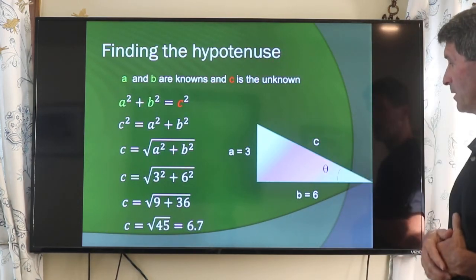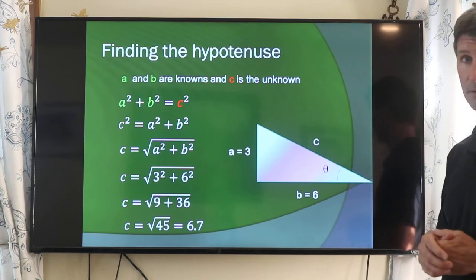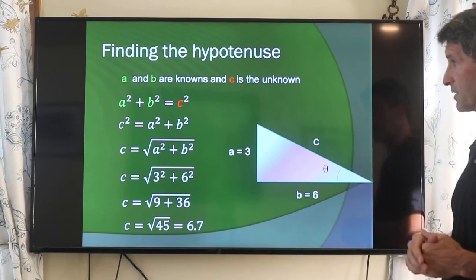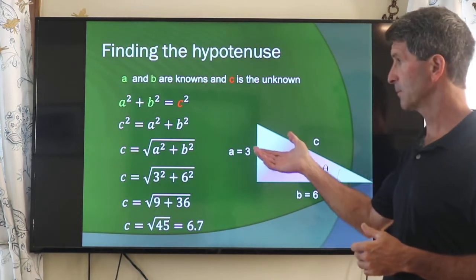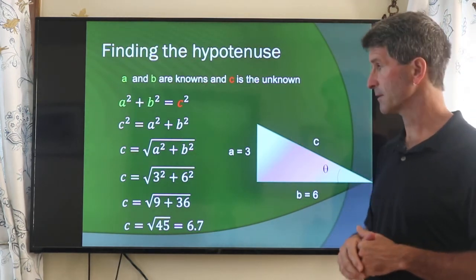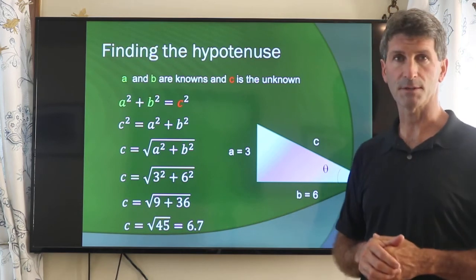Pythagorean theorem. This one's an easy one. If you know two of the sides, you can find the other side. Here we're solving for c. a squared plus b squared equals c squared. Put c by itself. Take the square root of both sides. And we can find out c.